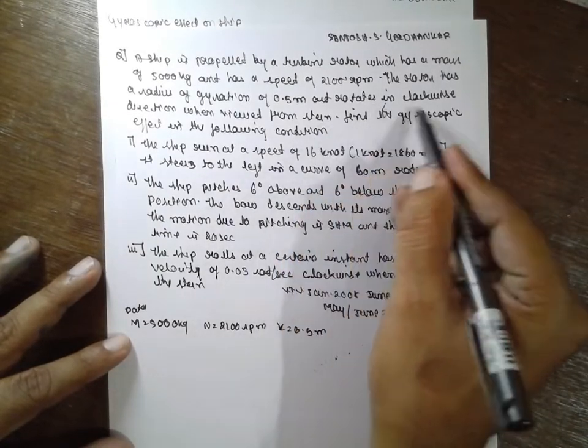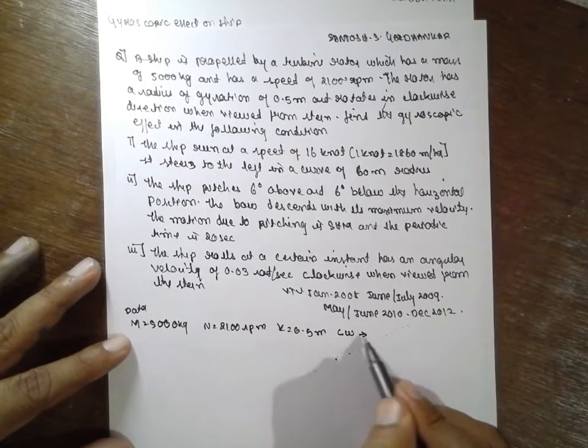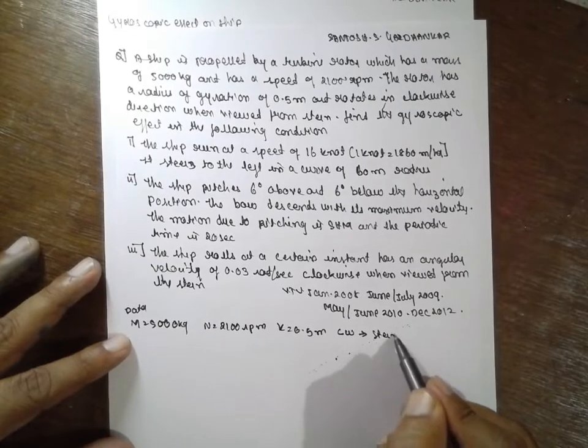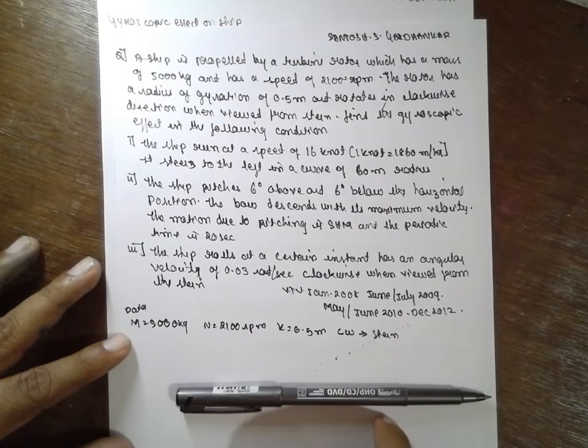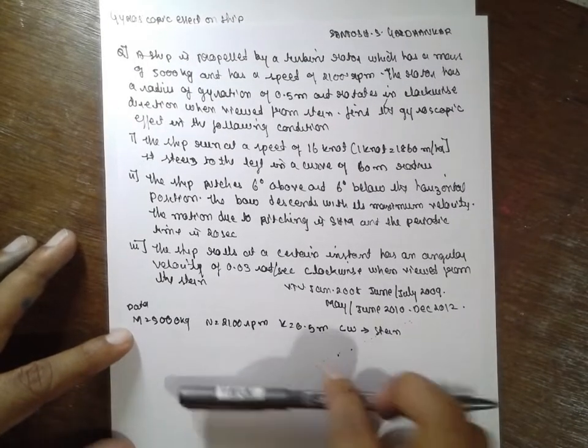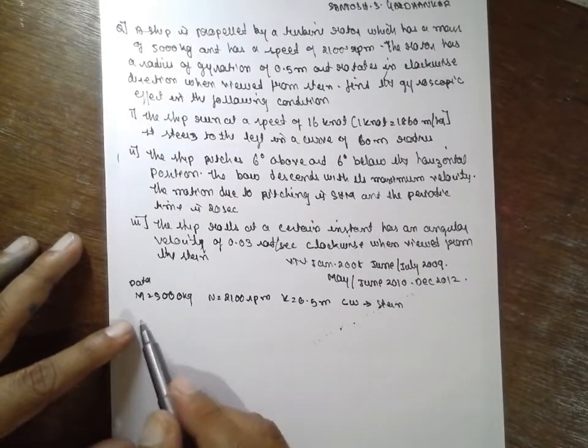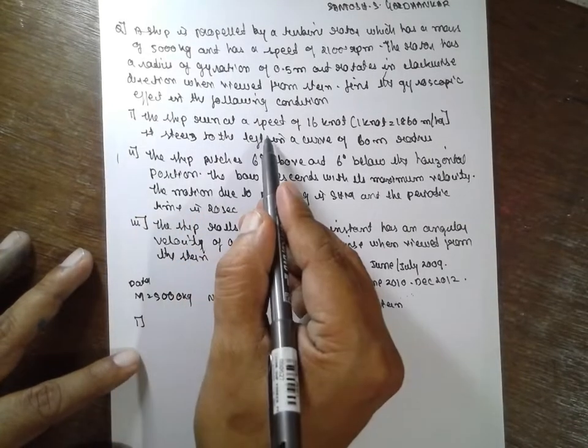The rotor is rotated in clockwise direction. Viewing is very important now. Direction is viewed from the stern, viewed from the backside of the rotor. This ship will be here. Rotor in clockwise direction. Viewing direction will be in this direction. Find the gyroscopic effect of the following condition. First condition, I will use first condition.